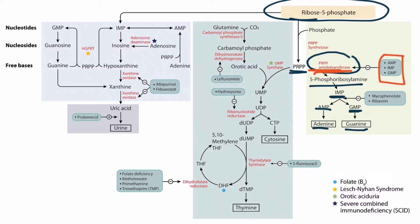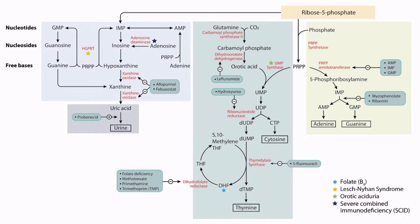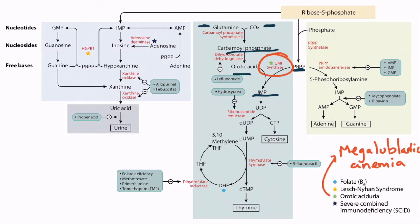Now let's discuss pyrimidine synthesis. Pyrimidine synthesis begins with glutamine and carbon dioxide combining to form carbamoyl phosphate. This is converted to orotic acid, which then combines with PRPP to form uridine monophosphate or UMP. Notice that this step requires UMP synthase, and a deficiency of this enzyme is associated with orotic aciduria, which results in megaloblastic anemia.